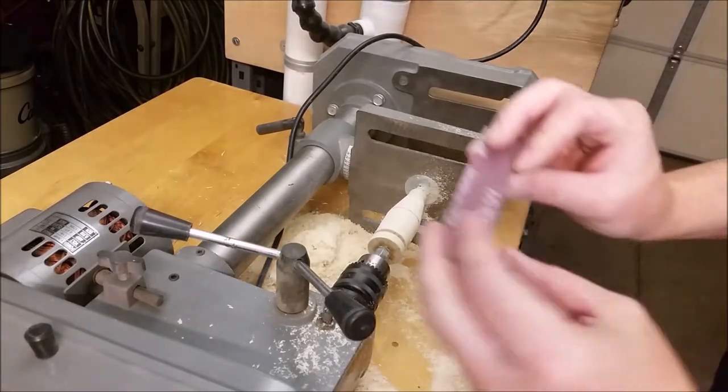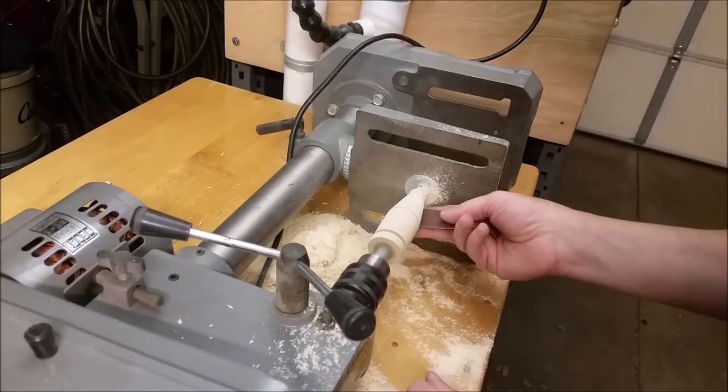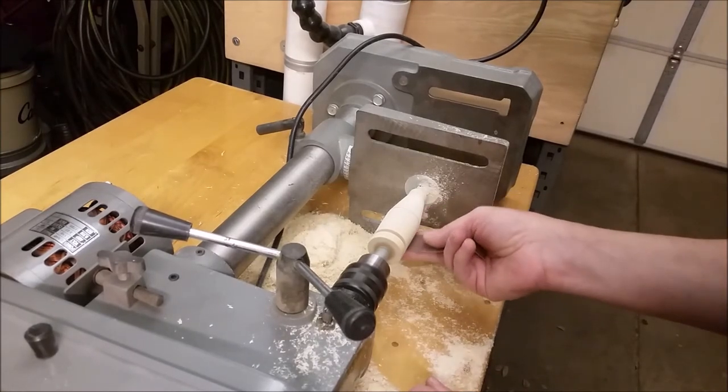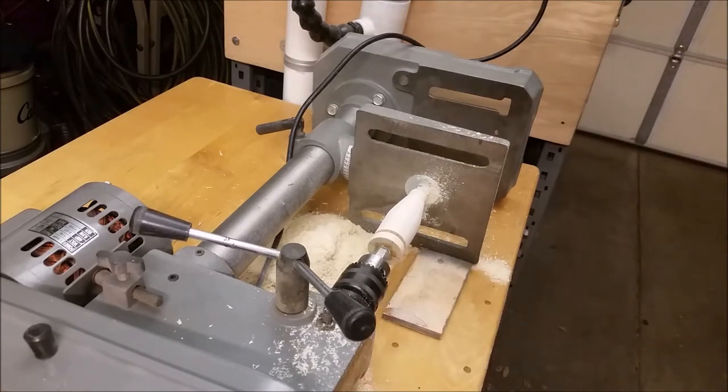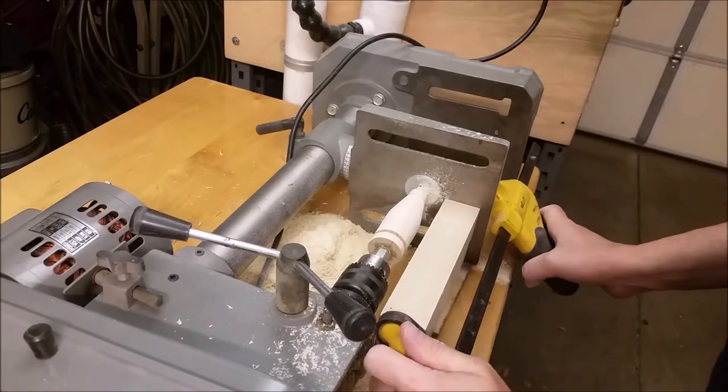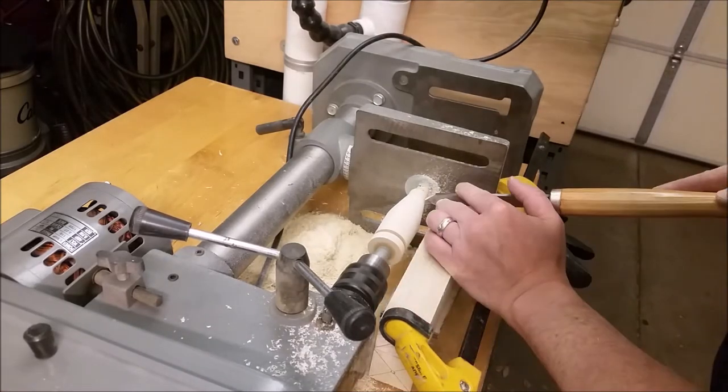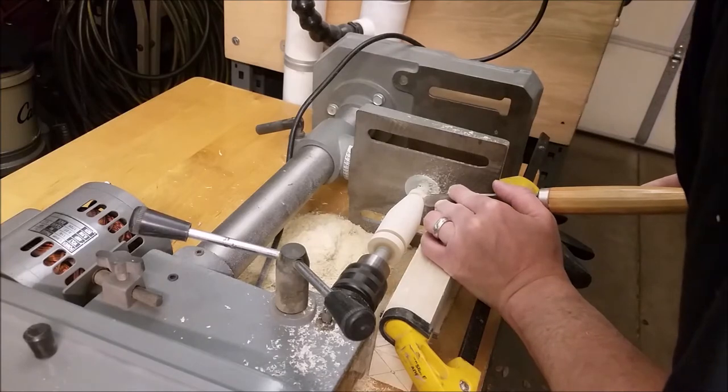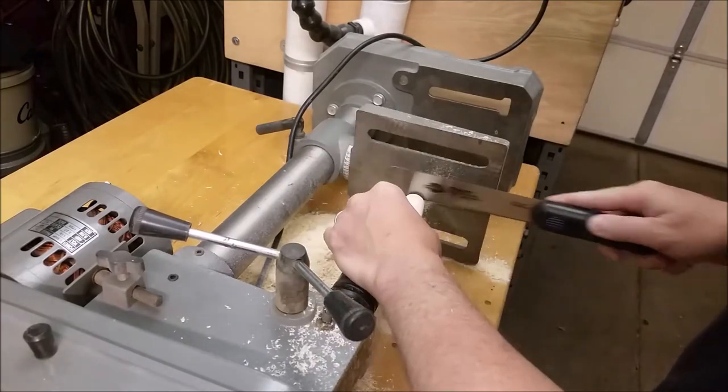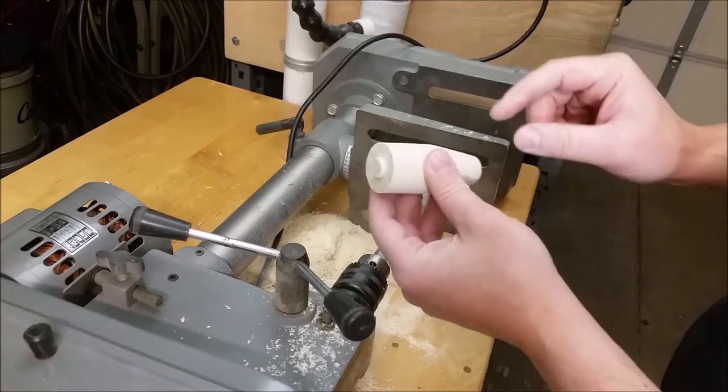All right, now we're going to sand it. I'm going to use some 180 grit belt paper. It's time to part it off of there. I got these little nubs on there, but I'll take the belt sander and sand those flat.